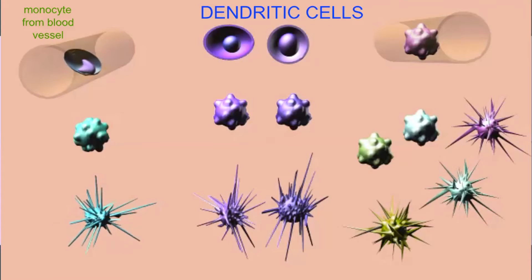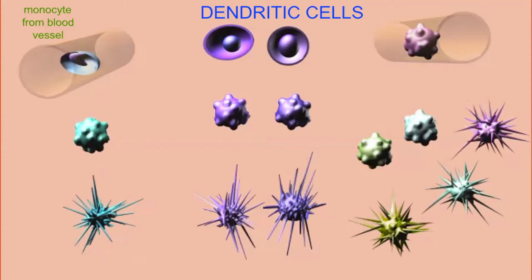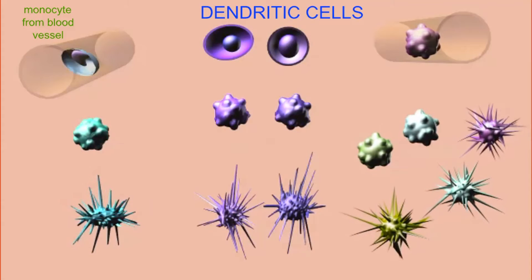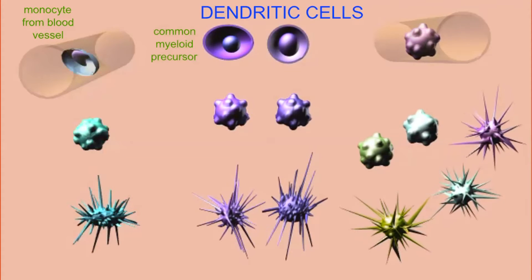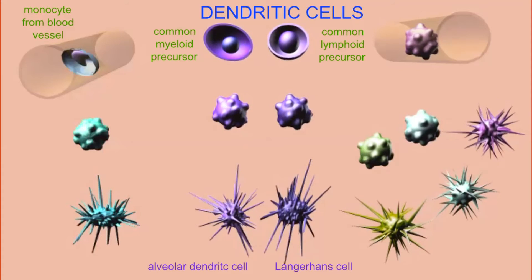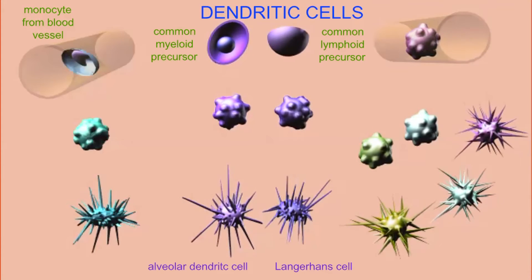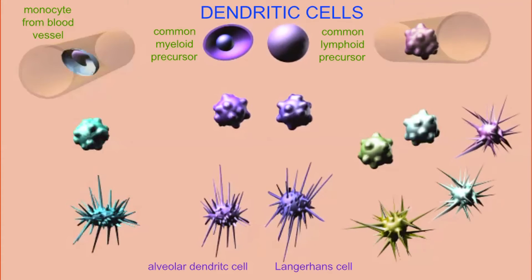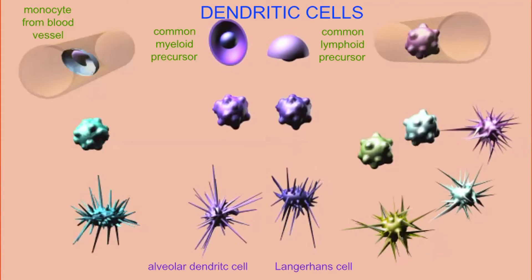While different classes of monocytes can differentiate into dendritic cells, most dendritic cells originate from the bone marrow precursor cells directly without going through a monocyte precursor stage. Some are produced by the common myeloid progenitor cells, while some are produced by the common lymphoid progenitor cells.